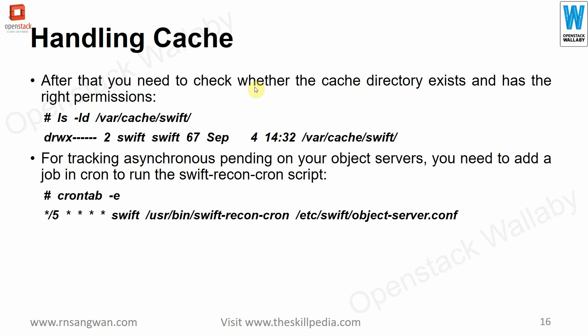For handling cache, check that the cache directory exists with the right permissions using `ls -ld /var/cache/swift`. The owner should have all permissions, but no permissions for group or others. For tracking asynchronous pending updates on object servers, add a cron job to run the swift-recon cron script. Use `crontab -e` and schedule it every 5 minutes.